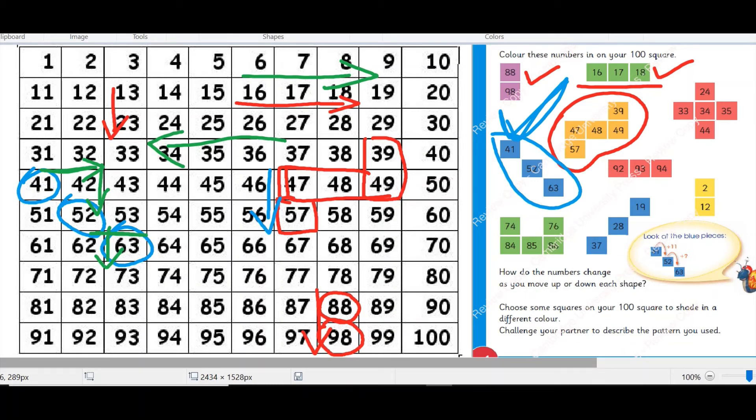Okay choose some squares on your 100 square to shade in a different color. You can choose any pattern and then you can ask your students, you can ask your partner which pattern is it. Let me do this 85 and if I choose 75, 95, 86 and 84.